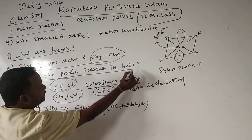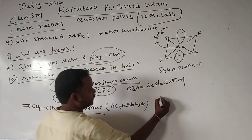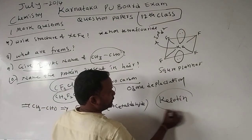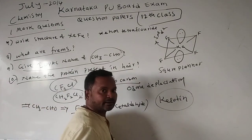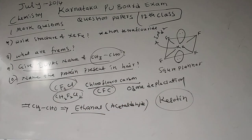Tenth question: name the protein present in hair. The answer is carotene (keratin) — present in hair, which is why hair is black in color. This completes the two question papers from 2014. Thank you.